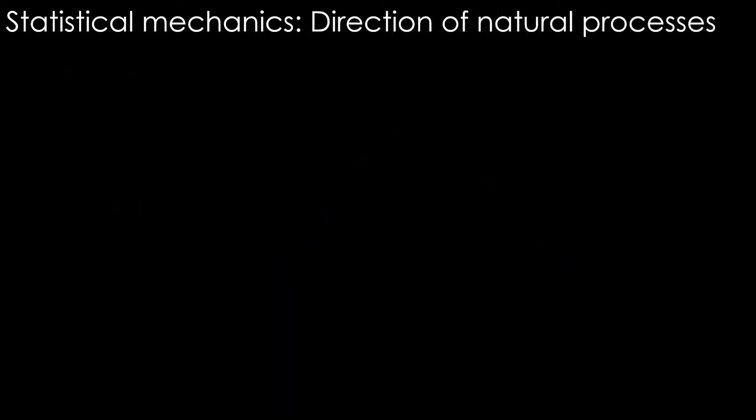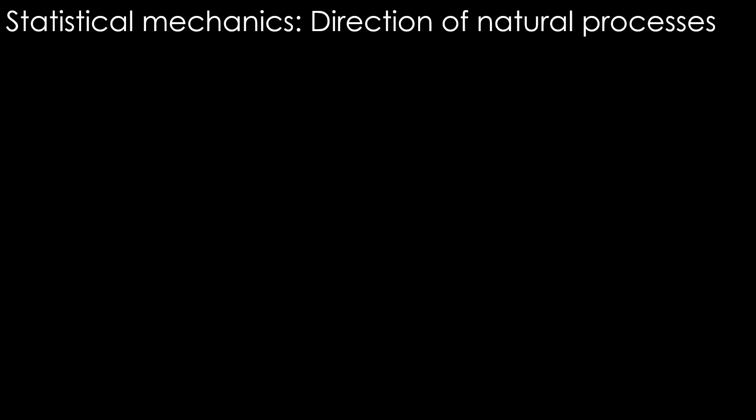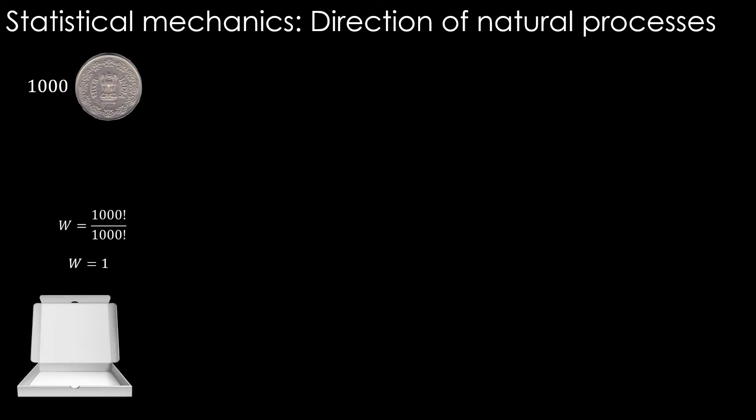Now, we will see an example which is, I would say, beautiful to understand what is called the direction of natural processes through statistical mechanics. Let's say we have 1000 coins in a box, all facing heads up. Let's take this box. How many number of ways are there to achieve this configuration of 1000 heads? The W - only one.